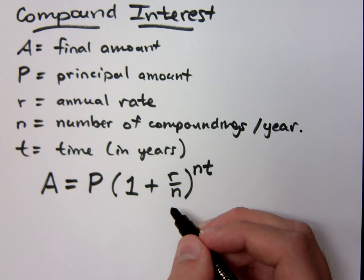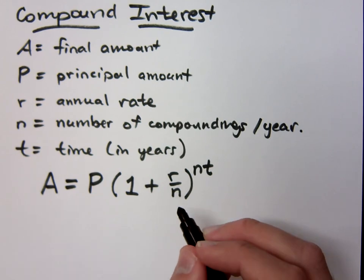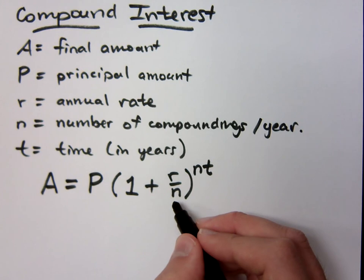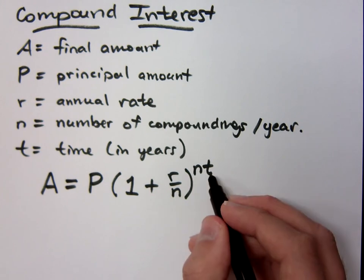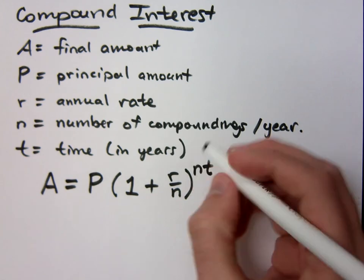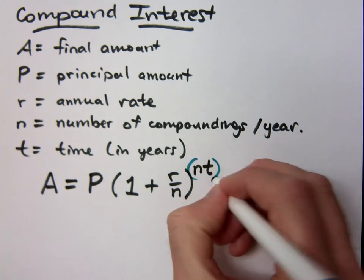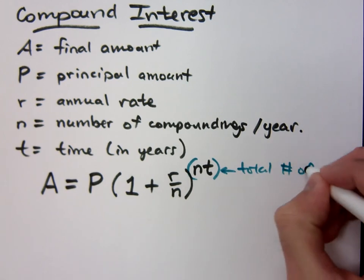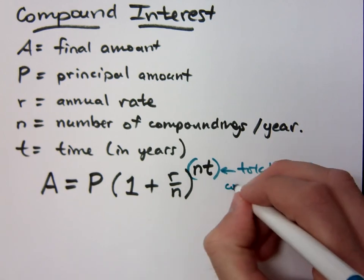But at the end, it's going to be more than 8%. N is just the number of compoundings you have every year. If it's quarterly, it's 4. If it's monthly, it's 12. And t is going to be the total number of years. Now this product of n times t, this is the total number of compoundings.